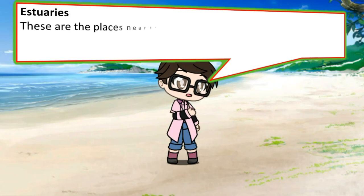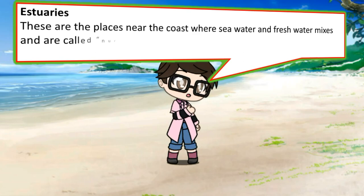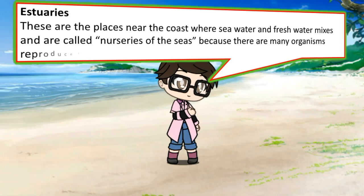Estuaries are places near the coast where seawater and freshwater mix, and are called nurseries of the seas because there are many organisms that reproduce in these areas.